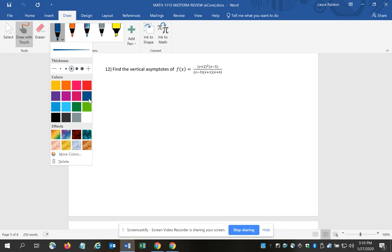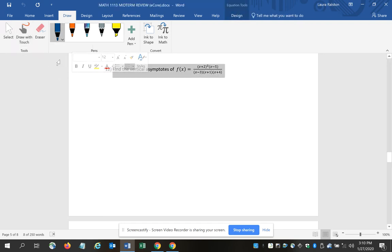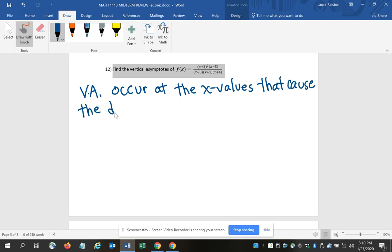Vertical asymptotes occur at the place where the denominator is equal to 0, or at the values of x that would cause the denominator to be 0. So vertical asymptotes occur at the x values that cause the denominator to be equal to 0. We need to determine what those values are – what numbers should we avoid?